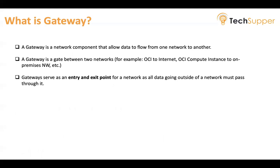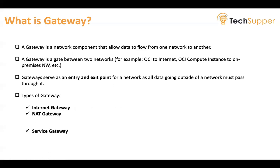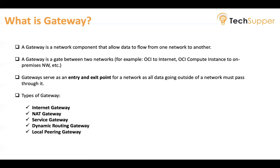Gateways serve as an entry and exit point for a network, as all data going outside of a network must pass through it. There are various types of gateways in OCI: Internet Gateway, NAT Gateway, Service Gateway, Dynamic Routing Gateway, and Local Peering Gateway. In the further slides I am going to discuss all these gateways.